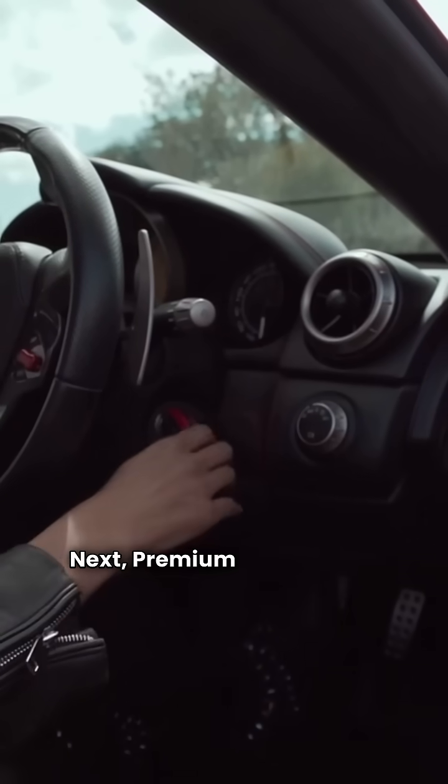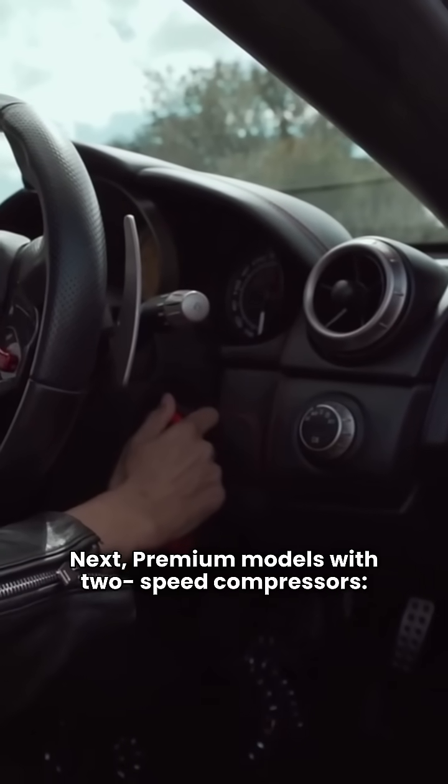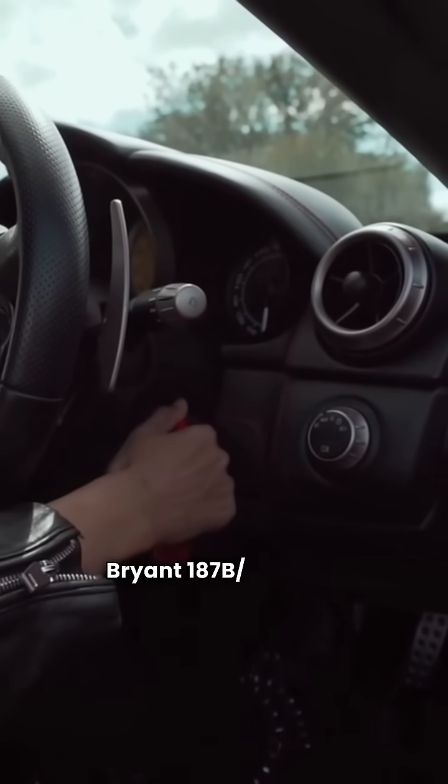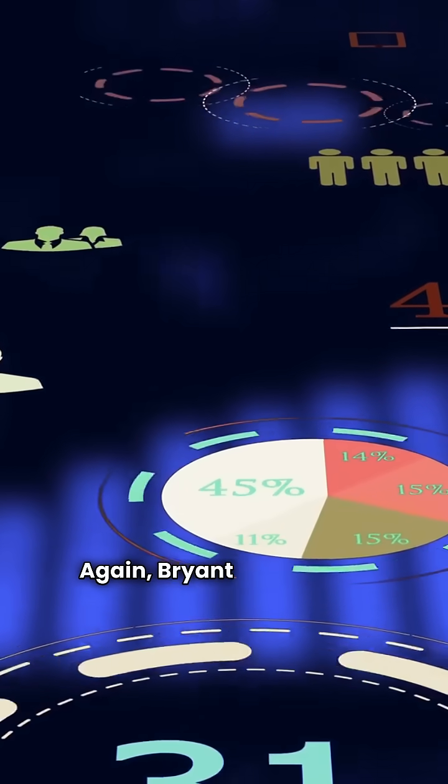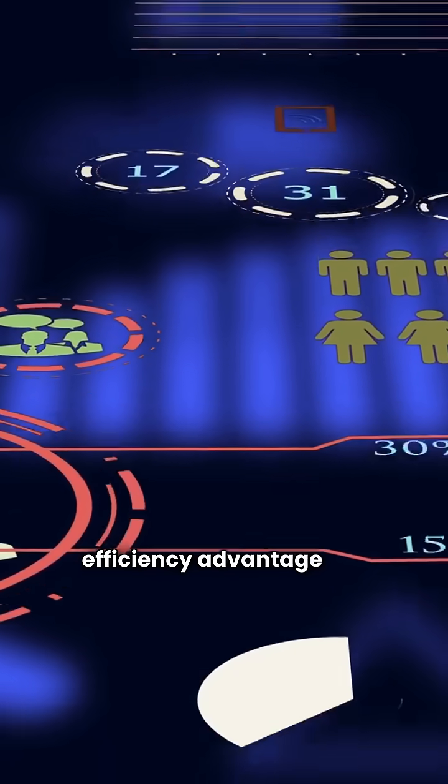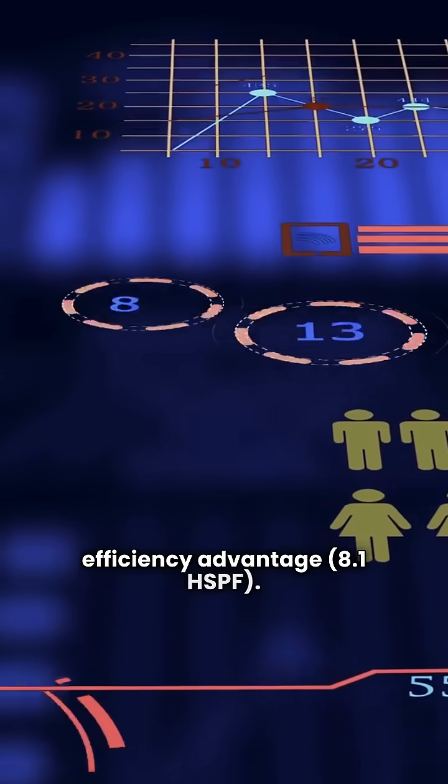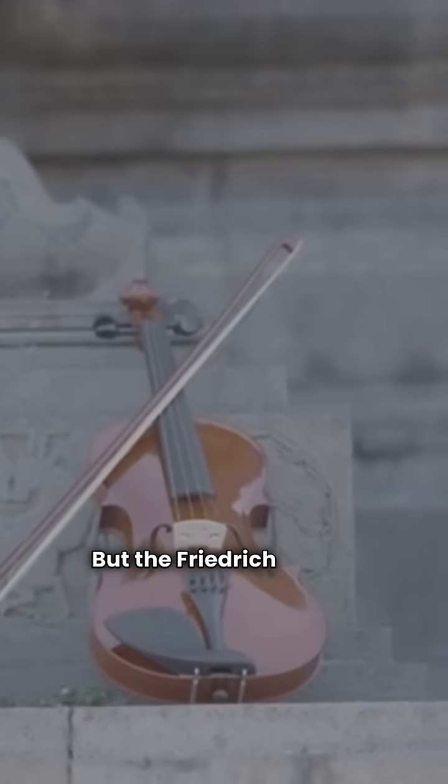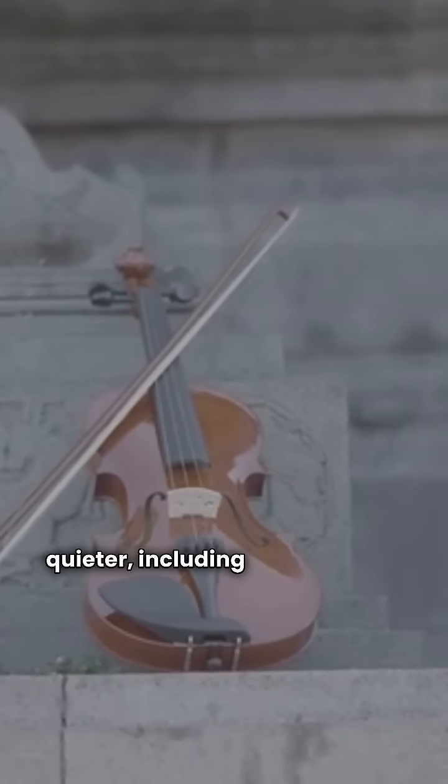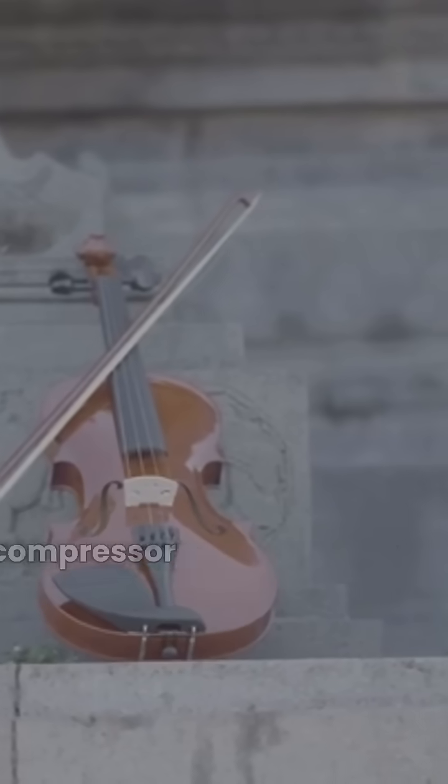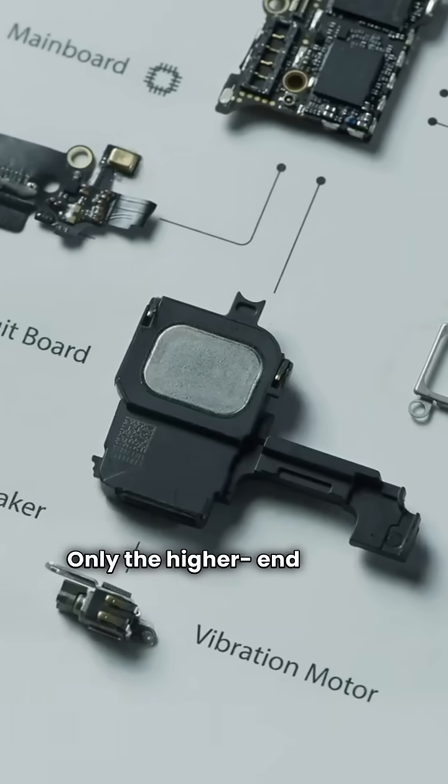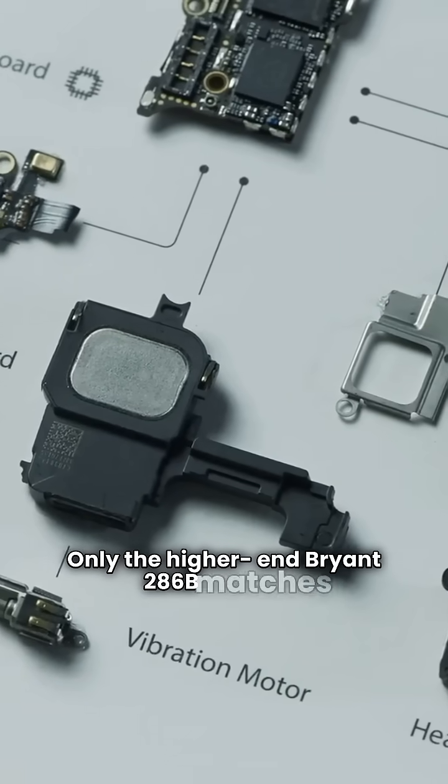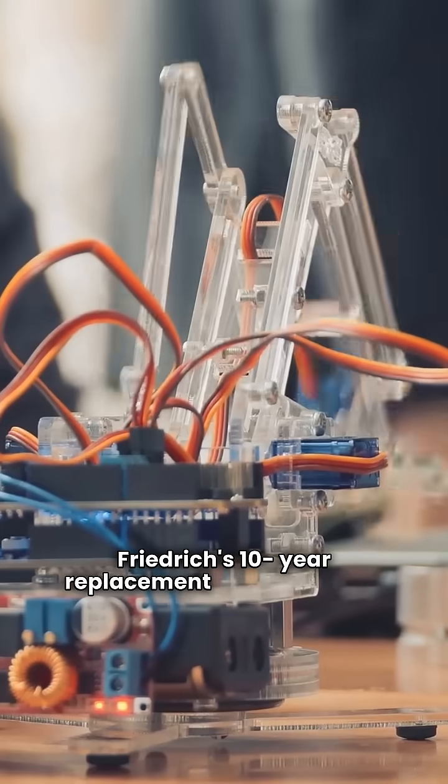Next, premium models with two-speed compressors, Bryant 187B/286B versus Friedrich FSH-4BF. Again, Bryant holds a tiny efficiency advantage, 8.1 HSPF, but the Friedrich is built tougher and quieter, including that louvered coil and a compressor blanket for sound dampening. Only the higher-end Bryant 286B matches Friedrich's 10-year replacement warranty here.